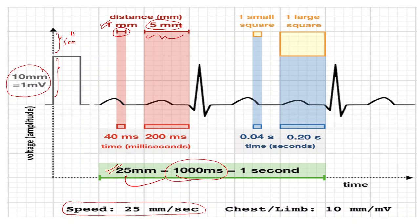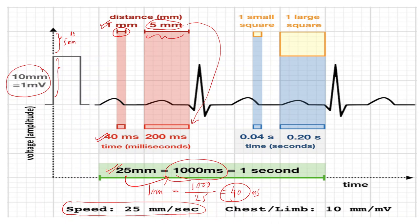So if 25 mm is 1000 milliseconds, how much will one small box be? One small box is 1 mm. So if 25 mm equals 1000 milliseconds, then 1 mm or one small box equals 1000 divided by 25, which is 40 milliseconds. So 1 small box equals 40 milliseconds, and 1 large box equals 200 milliseconds — that is 0.04 seconds for one small box and 0.2 seconds for one large box.